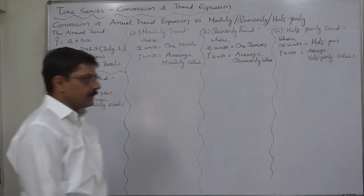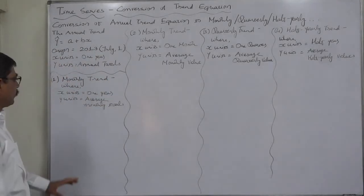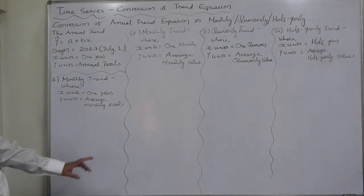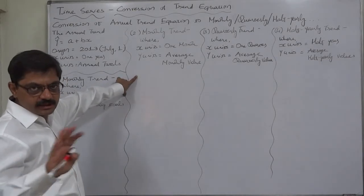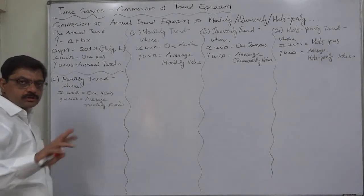Now we can convert this annual trend into monthly, quarterly, half-yearly. In which way that we are going to discuss. This can be converted into a monthly trend in two ways. Theoretically we are discussing this point, that's why I am going to discuss all the two ways.